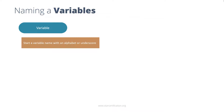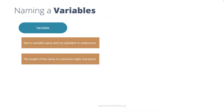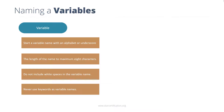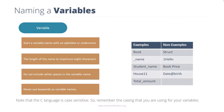Always start a variable name with an alphabet or underscore. Keep the length of the name to a maximum of eight characters. Do not include white spaces in the variable name. Never use keywords as variable names. Note that C language is case sensitive, so remember the casing you are using for your variables. Some examples and non-examples of variable names are listed on the screen.